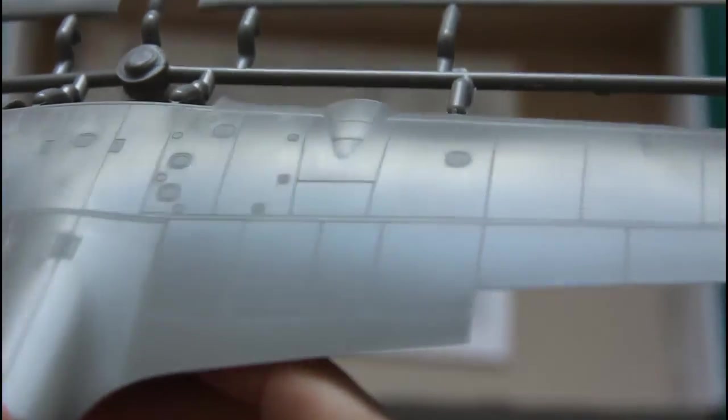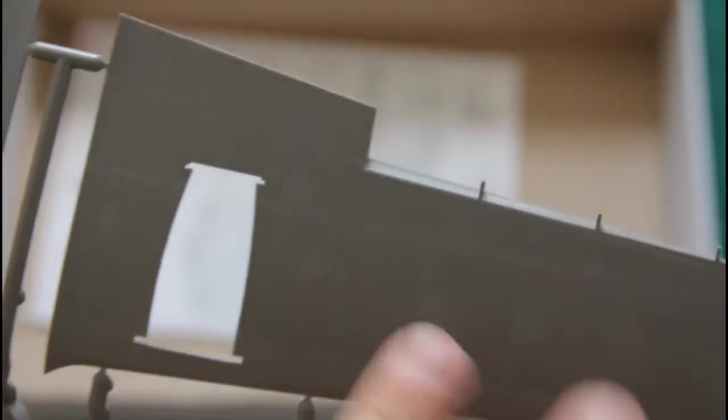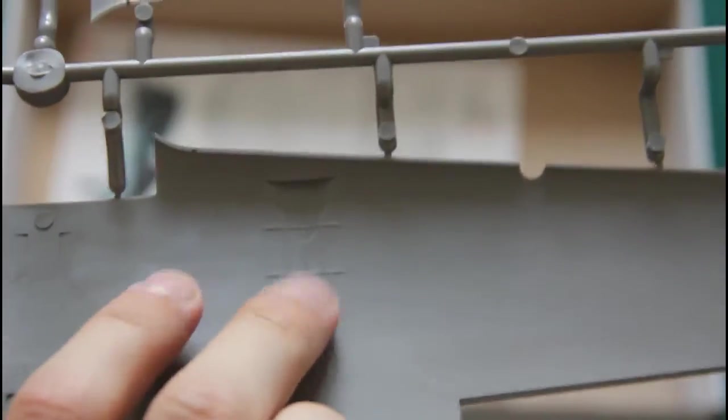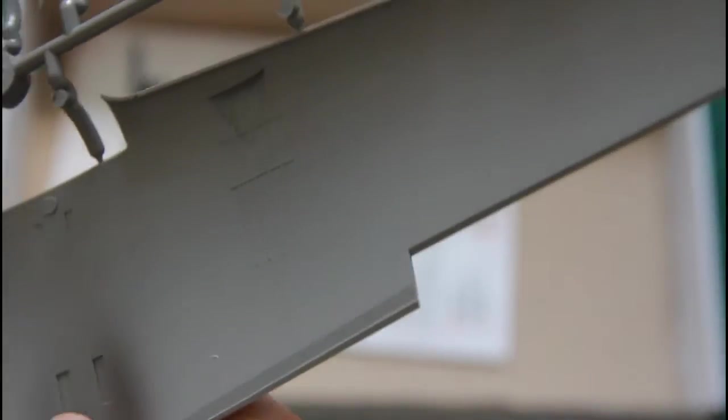Last but not least is a sprue with huge wing parts. Here you can see that they feature recessed panel lines too. And again as I said, here we have separately molded ailerons. I think that they will be positionable if you would like to. Here we have some minor detailing of the wheel wells. Also note that here we have special positioning slots, so these huge parts will be aligned together with help of the small points.